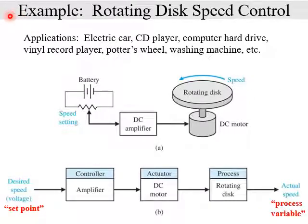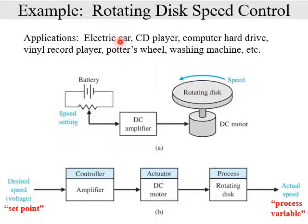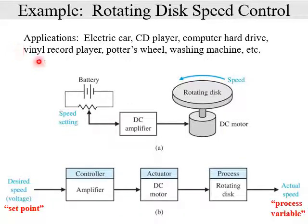Our first example is a rotating disk speed control. This has many applications wherever you need something turning — for example, the wheels of an electric car, a CD or DVD player, a computer hard drive, a vinyl record player, a potter's wheel, or even a washing machine.